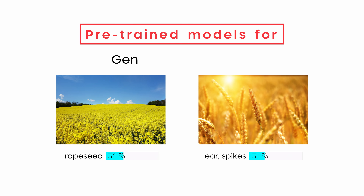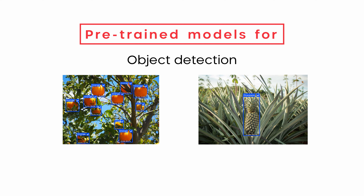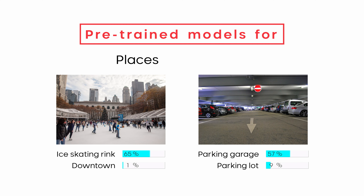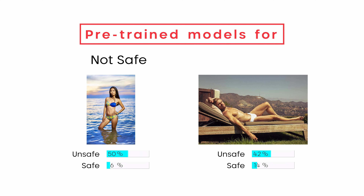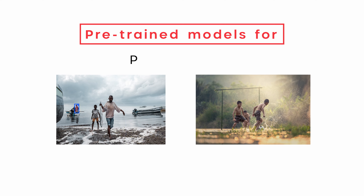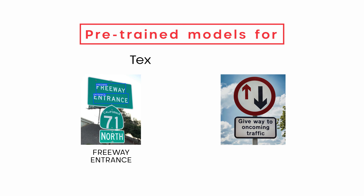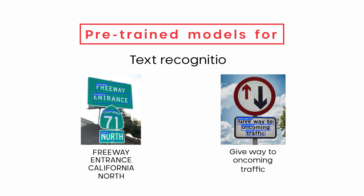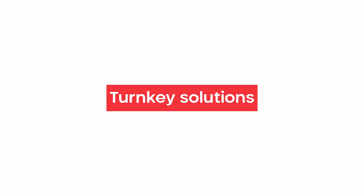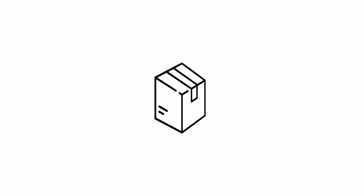We have pre-trained models for general classification, object detection, places identification, not-safe-for-work detection, pose estimation, and text recognition. These are turnkey solutions that you can use right out of the box.